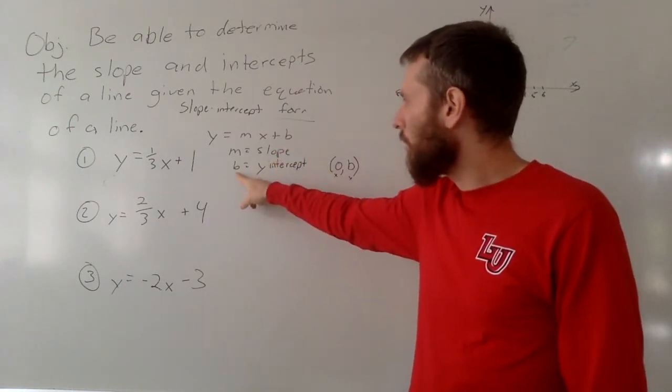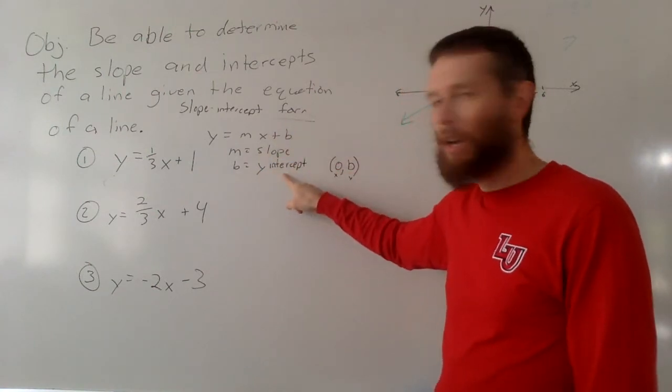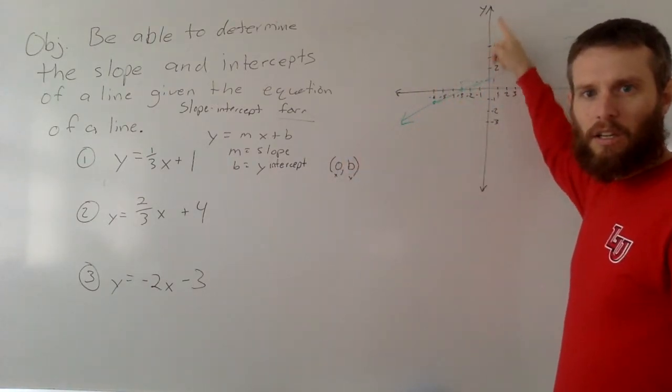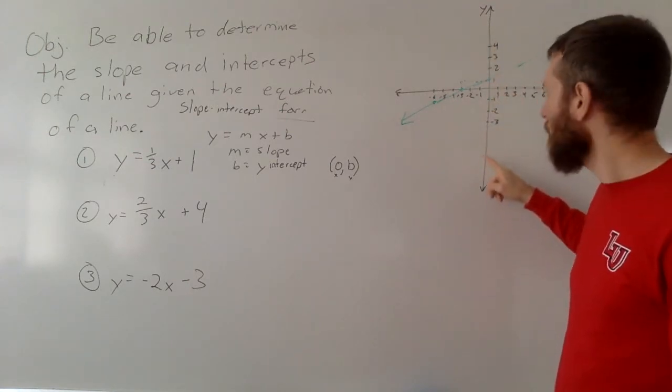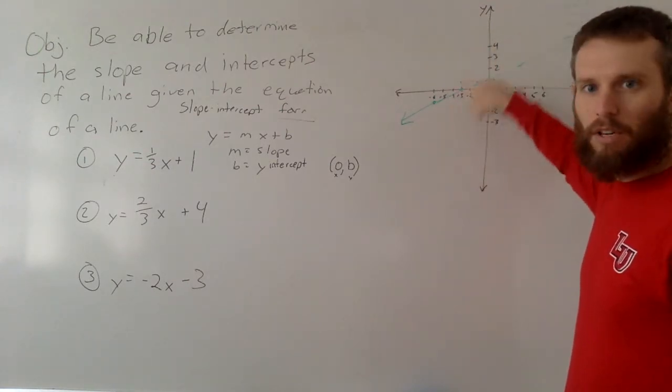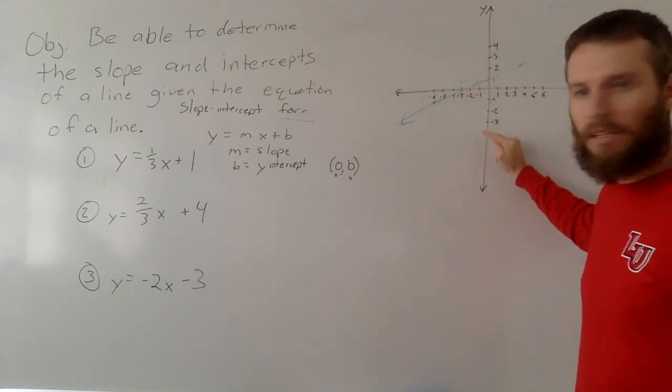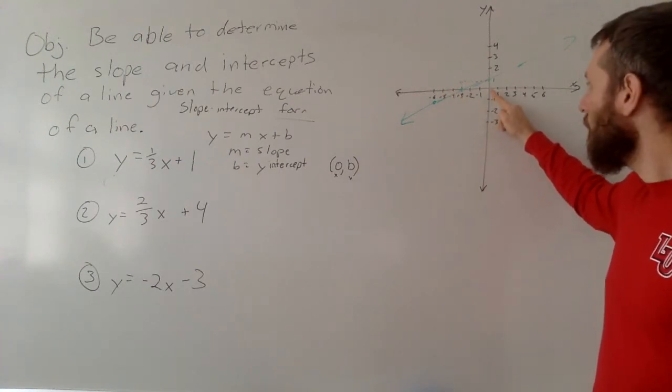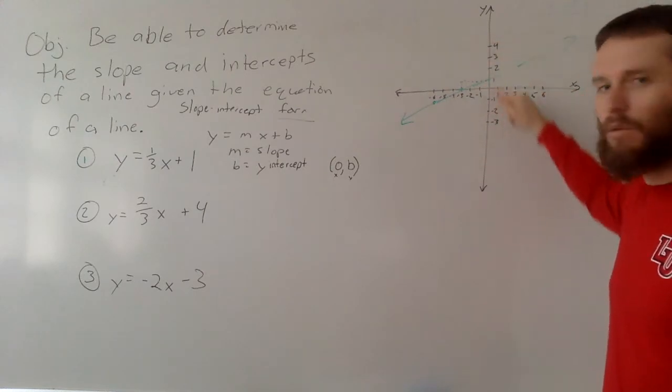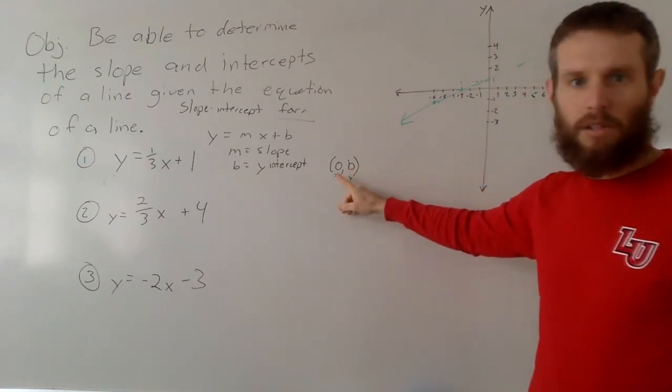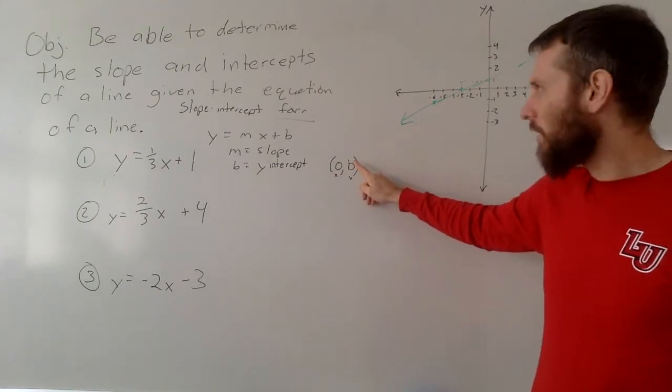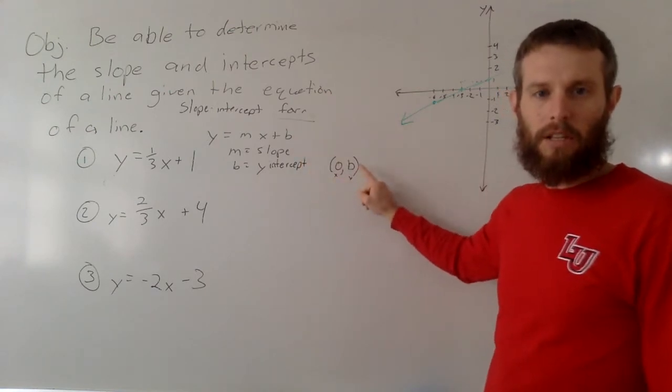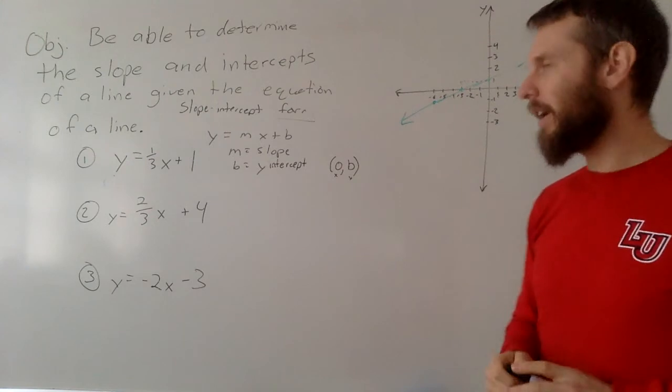And then the b, whatever is here, is going to be the y-intercept. And we know that the y-intercept is where the line, the graph of your line, crosses the y-axis. So wherever this line is crossing, no matter which direction it goes, wherever it crosses the y-axis, the x-coordinate is 0, because you're in the middle of the x-axis, and then wherever it crosses the y is going to be your y-intercept. So we'll write that 0, whatever number that is. And again, if it's written like this, your b, whatever number b is, it's going to be 0, that number, that's where it crosses the y-axis.